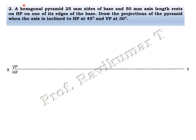The next problem is a hexagonal pyramid with the same dimensions — 25mm sides, 50mm axis length, resting on HP on one of its edges. Draw the projection when the axis is inclined to HP at 45 degrees and VP at 30 degrees. Here, the axis of the pyramid is inclined to VP — not the edge of the base. Since the axis is inclined to both planes, this is called a locus problem.